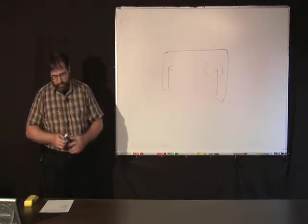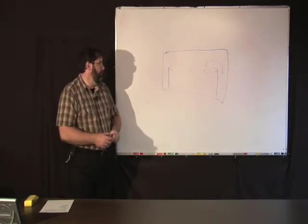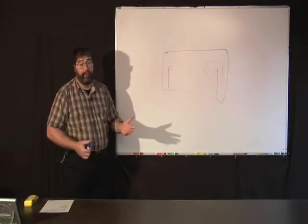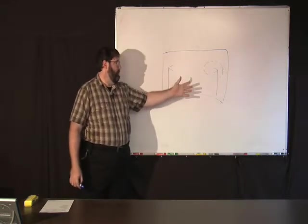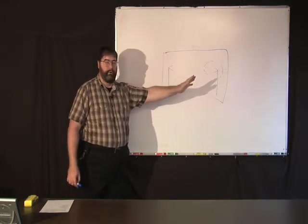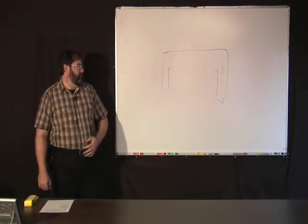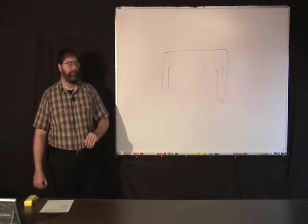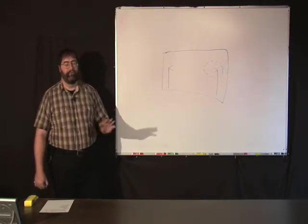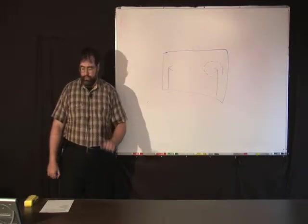Now there's also something called a semi-anechoic chamber, where there's anechoic material on all the walls and the two side walls, but not on the floor. Typically, on the floor for a semi-anechoic chamber is a metal ground plane. And there's reasons for doing that. You might want to do certain types of testing where you want a metal ground plane, and that's what a semi-anechoic chamber is for.